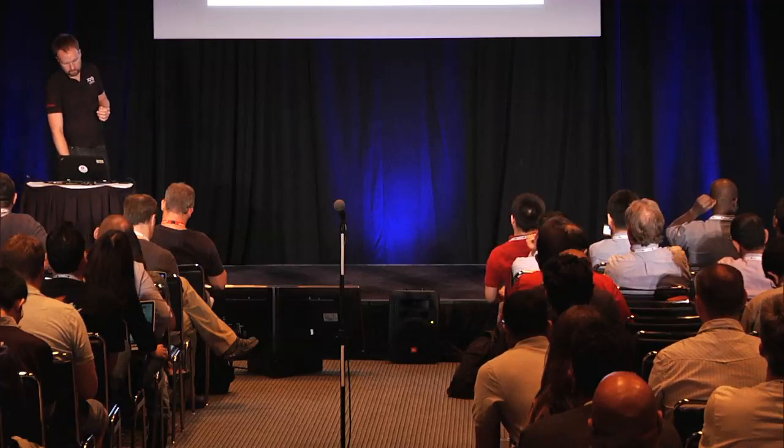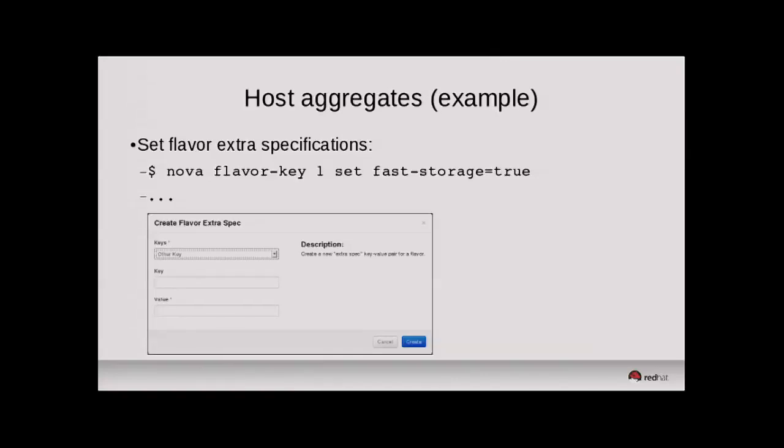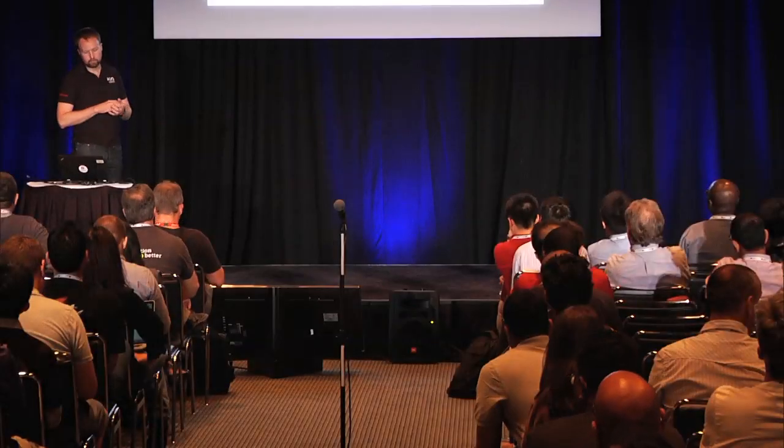Because I'm using regions and they're completely separate compute deployments, I need to define those host aggregates again in the other side of the cloud. To make those aggregates user-targetable, I modify my flavors to have extra specifications matching the host aggregate metadata — now possible through both the command line and Horizon. New in Icehouse in Horizon, you can create host aggregates and availability zones, but you can't yet set the metadata on the host aggregate from Horizon — only initial aggregate creation and flavor modifications.